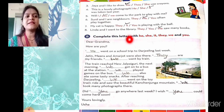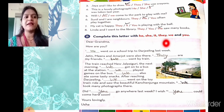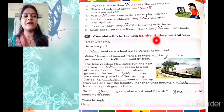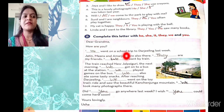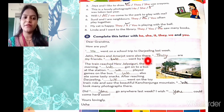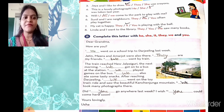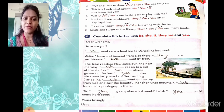Exercise B: complete this letter with he, she, it, they, we and you. You have to use these pronouns where appropriate. For example: Dear Grandma, how are you? We went on a school trip to Darjeeling last week. Jatin, Meera and Amarjot were also there — Jatin, Meera and Amarjot are plural, so the pronoun 'they' is used. Complete the paragraph in the same way using he, she, it, they, we and you.